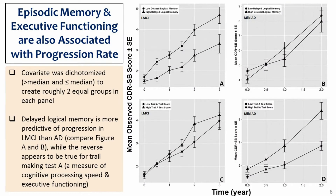Additional covariate analysis indicated that episodic memory, as measured by the Wechsler memory scale delayed logical memory 2, and executive functioning were also associated with progression rate. The results also suggest that episodic memory is more predictive of progression in late MCI than AD, while the reverse appears to be true for executive functioning.